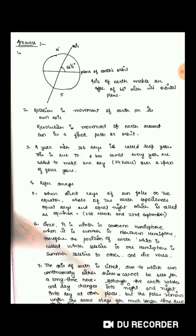Our next question was, why do poles experience about six months day and six months night? The axis of earth is tilted, due to which sun continuously either shines or cannot be seen for a long time at the poles. Although earth rotates and day changes into night and night into day at other places, the poles remain under the same stage for much longer time due to its tilted axis.